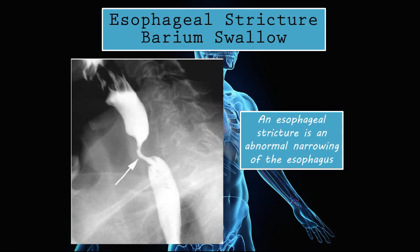Esophageal stricture on barium swallow: an esophageal stricture is an abnormal narrowing of the esophagus. You can see this tube is supposed to be the same circumference all the way down, but in the middle there is an abnormal narrowing — this is called an esophageal stricture, and this is what it looks like on a barium swallow test.